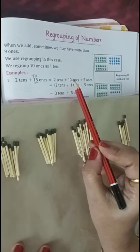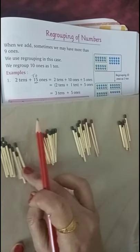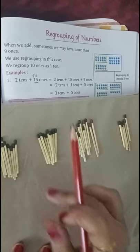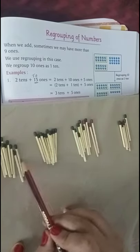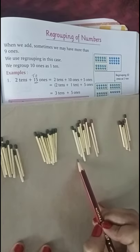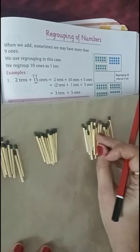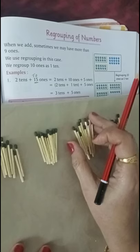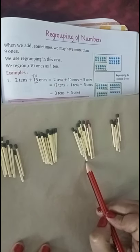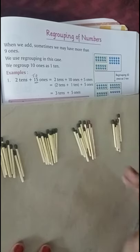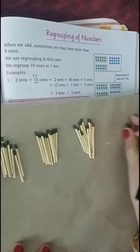So this way I have divided this. See, 2 tens plus 10 ones plus 5 ones. I don't have rubber bands actually. I have to bring 2 tens again. 2 tens plus 10 ones, so I have 15 ones - 10 ones and 5 ones. 10 ones is equal to 1 ten.